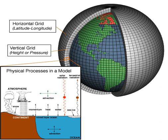Most models include software to diagnose a wide range of variables for comparison with observations or study of atmospheric processes. An example is the 2-metre temperature, which is the standard height for near-surface observations of air temperature. This temperature is not directly predicted from the model but is deduced from surface and lowest model layer temperatures. Other software is used for creating plots and animations.